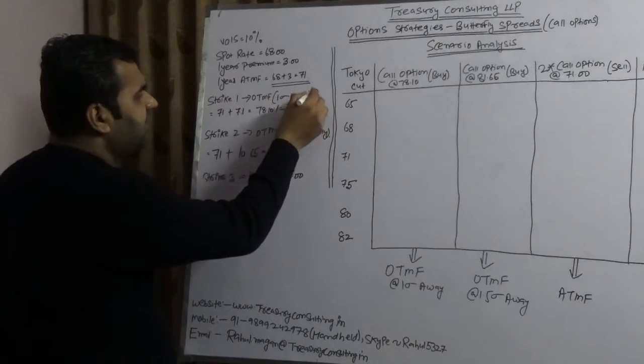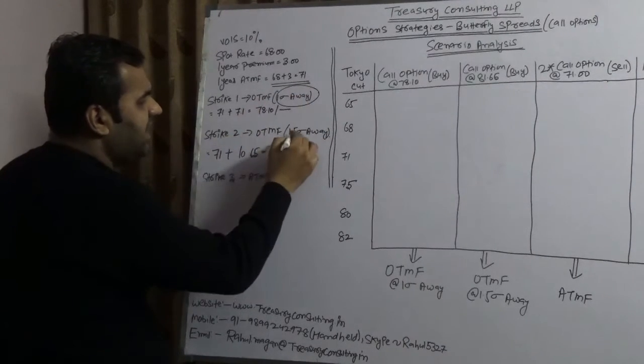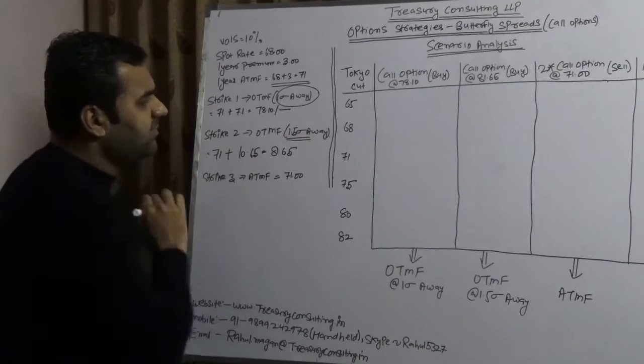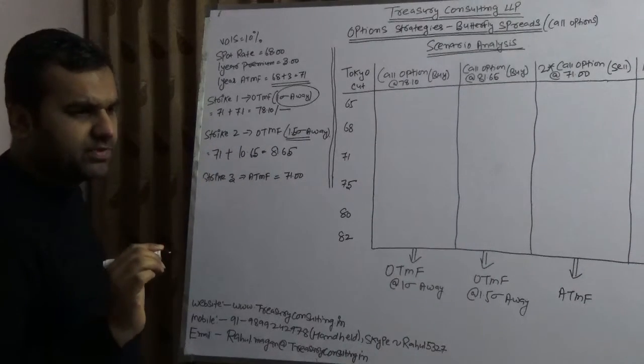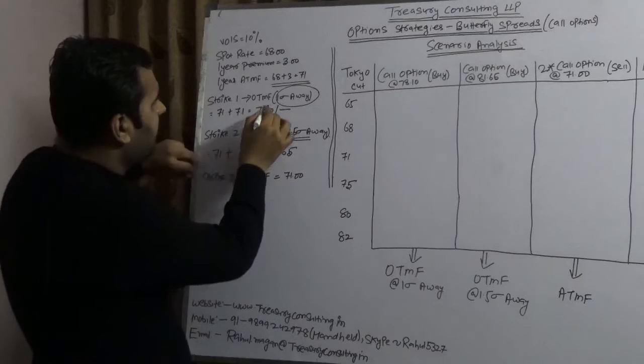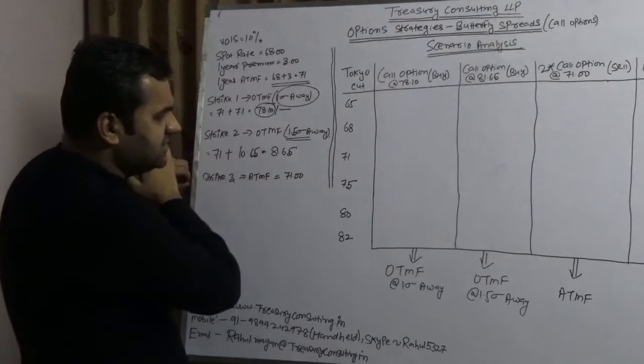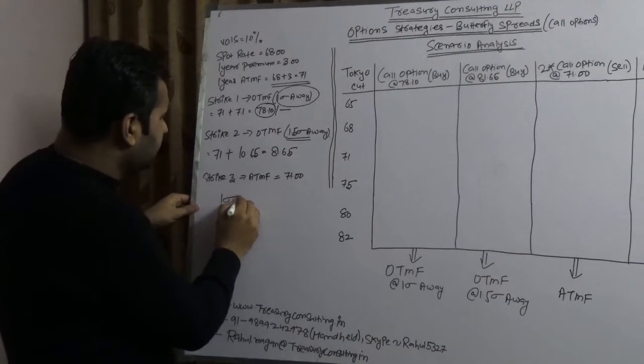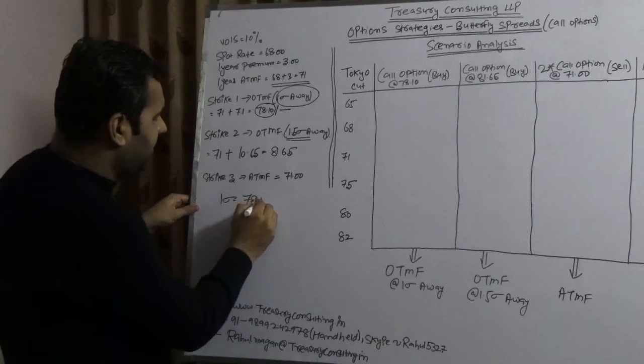In case of 2, here we have taken 1 volatility and here we have taken 1.5 volatility away. So here if you take, it is 78.10. So 1 vol price you are getting 78.10.